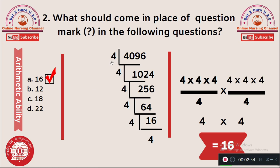Count the 4s — there are six 4s. Writing it as (4 × 4 × 4) / (4 × 4 × 4) divided by 4, the common number on both sides is 4, so we get 4 × 4 = 16. Option A, 16, is the right answer.